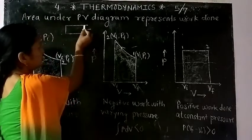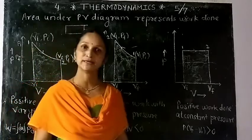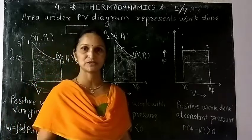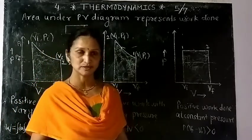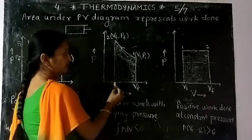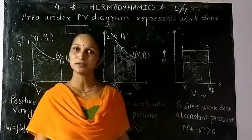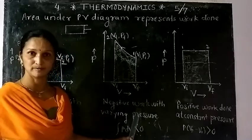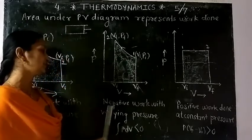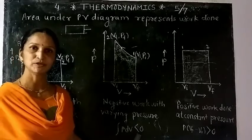If the piston is moved inwards — pushed inwards — volume decreases and pressure increases. The initial state is state 1 and the final state is state 2. Here, work is done on the gas, so this work done is negative. This is negative work with varying pressure, meaning ∫P dV is less than zero.